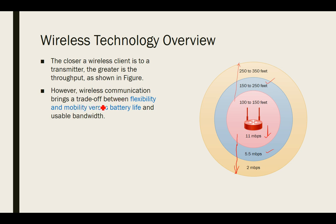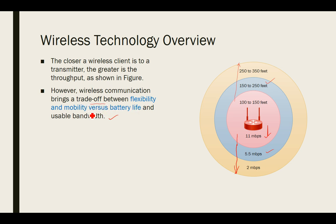Wireless communication brings a trade-off between flexibility and mobility versus battery life and usable bandwidth. For example, when your mobile phone is within the range of a mobile network tower, the battery does not drain quickly. But when you move outside a building, away from the wireless access point, battery life drains continuously. That is the trade-off between flexibility and mobility versus battery life.